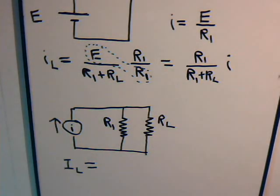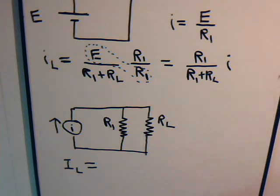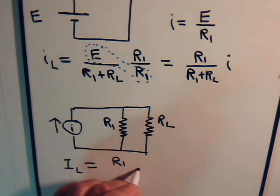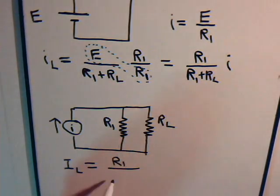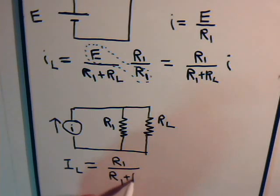The current that goes through resistor L is equal to the value of this resistor divided by the sum — this is the current divider principle that we talked about in video number two.